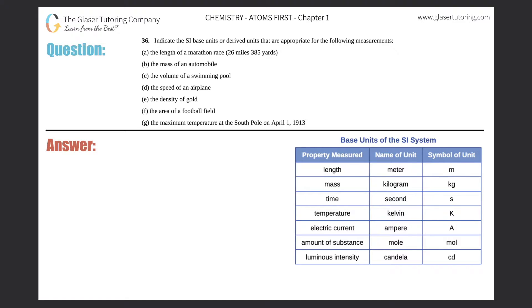Number 36: indicate the SI base units or derived units that are appropriate for the following measurements. I see that I have a through g here, so the first thing I'm going to write is a through g. Let's do the alphabet: a, b, c, d, e, f, g, perfect.